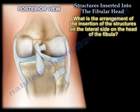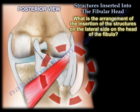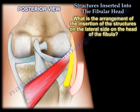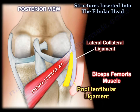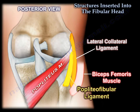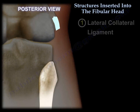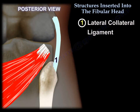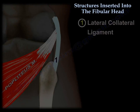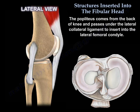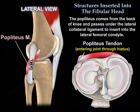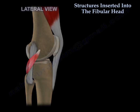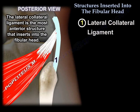So what is the arrangement of insertion of the structures on the lateral side on the head of the fibula? The most anterior one is the lateral collateral ligament, which arises from the lateral femoral condyle and is proximal and posterior to the popliteus tendon insertion. It is superficial to the popliteus tendon. The popliteus goes from the back posteriorly underneath the ligament to reach the lateral femoral condyle, anterior and distal to the lateral collateral ligament.